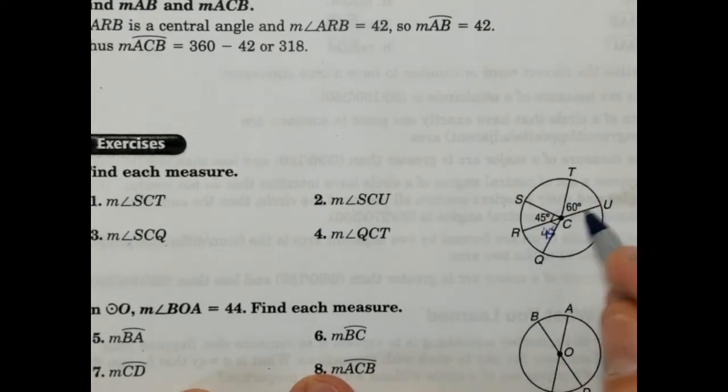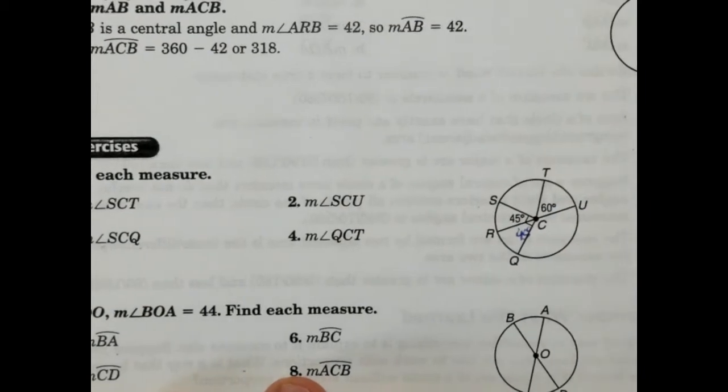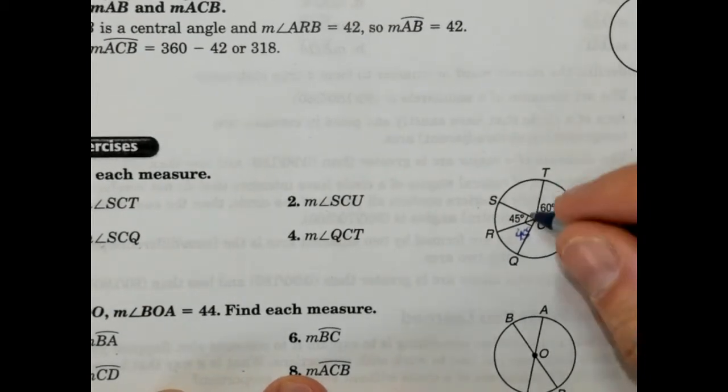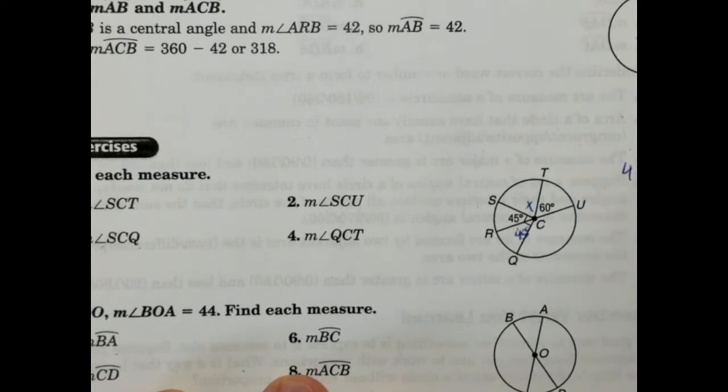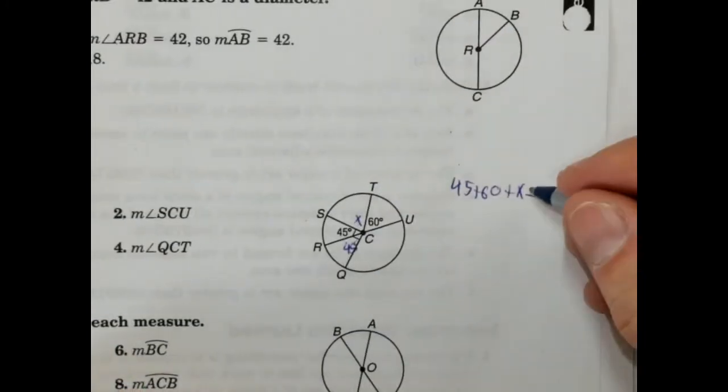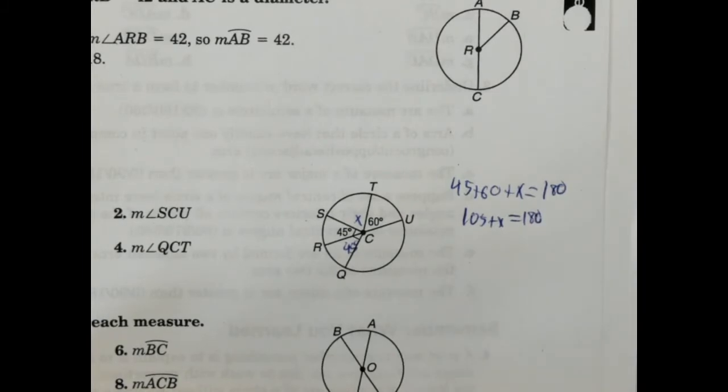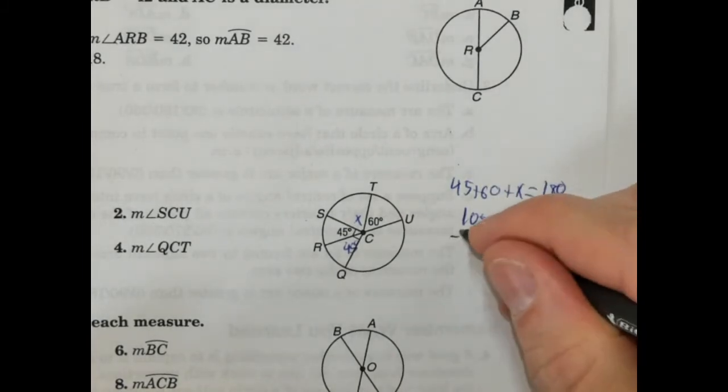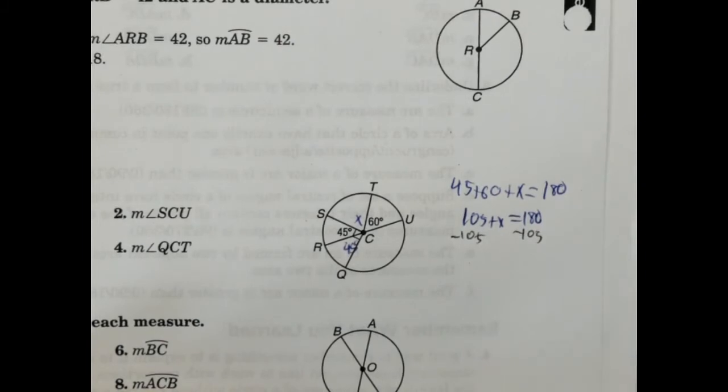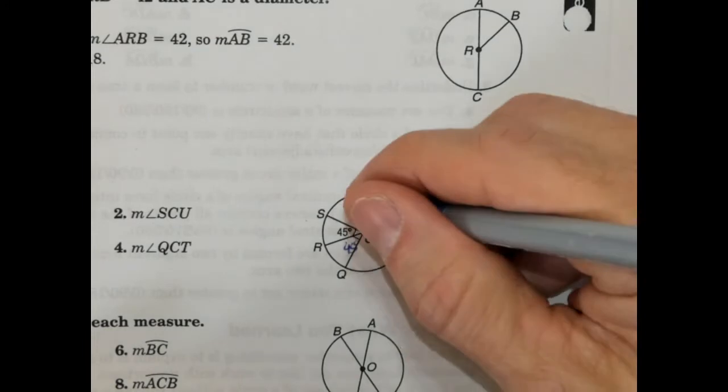This is the diameter, which means these three angles have to add up to 180 degrees. So we're going to call that x. So 45 plus 60 plus x equals 180. We're going to go ahead and solve for that. So 45 plus 60 would be 105 plus x equals 180. We're going to subtract 105 from both sides. So x would be 75 degrees.